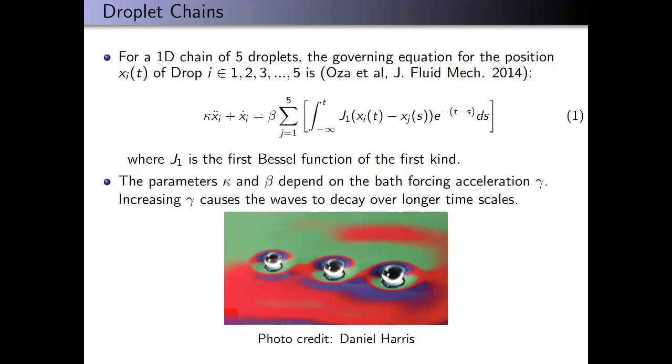J1 is a Bessel function, which comes because we're assuming the waves have the shape of Bessel functions. The exponential decay term in the integral says that the waves are decaying exponentially in time. The parameters kappa and beta depend on gamma, which we call the memory parameter because how long the waves stay on the surface depends directly on gamma. Higher gamma means the waves stay around longer, and lower values of gamma means they decay more quickly.